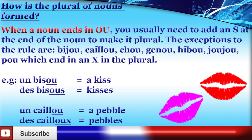When a noun ends in OU, you usually need to add an S at the end of the noun to make it plural. The exceptions to the rule are bijou, caillou, chou, genou, hibou, joujou, and poux, which end in an X in the plural.